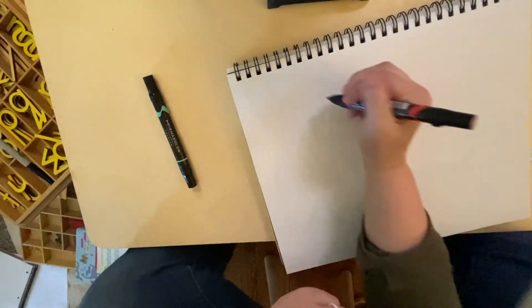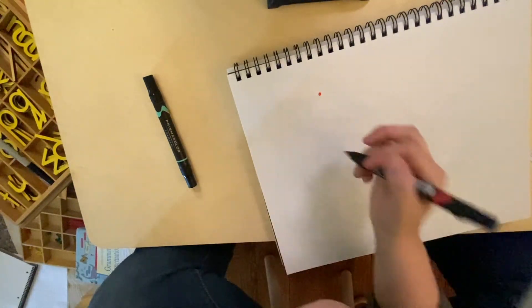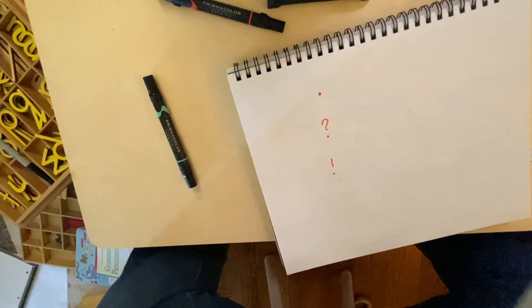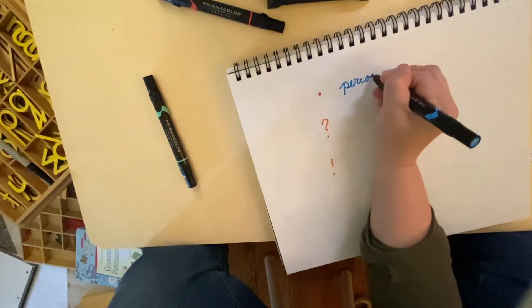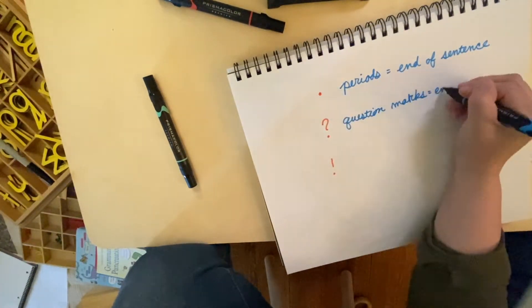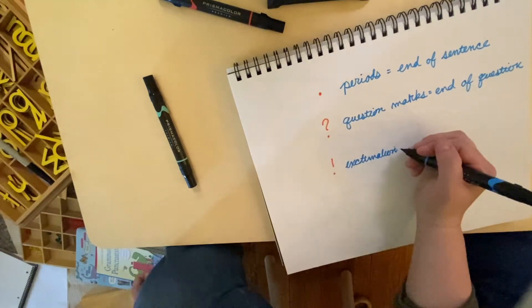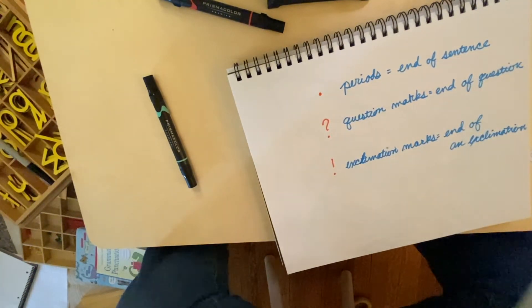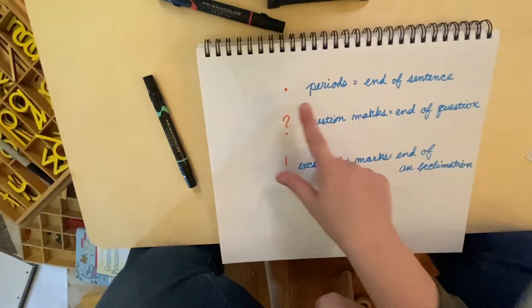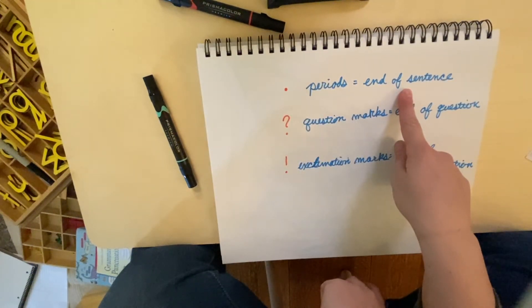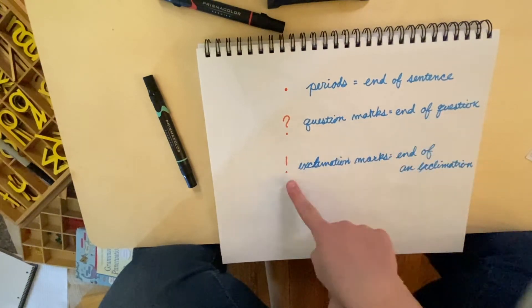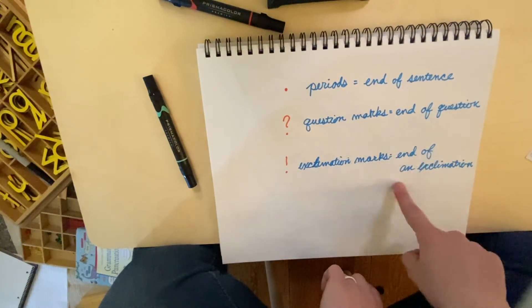So again: we use periods at the end of a sentence, question marks at the end of a question, and an exclamation mark at the end of an exclamation.